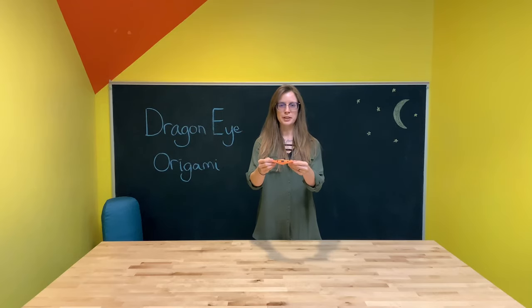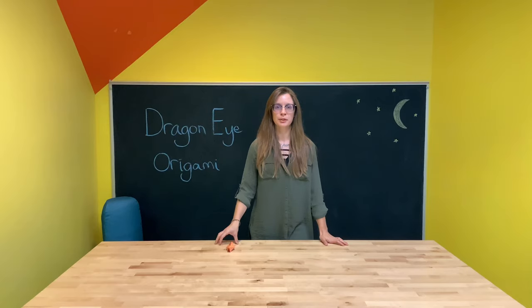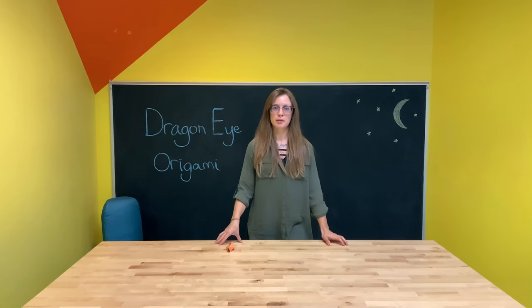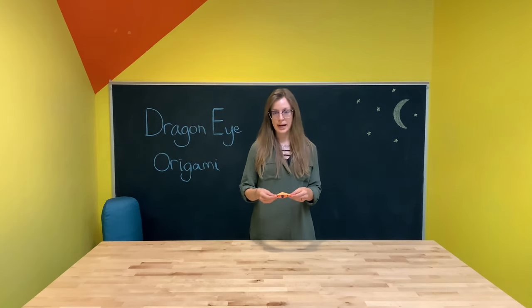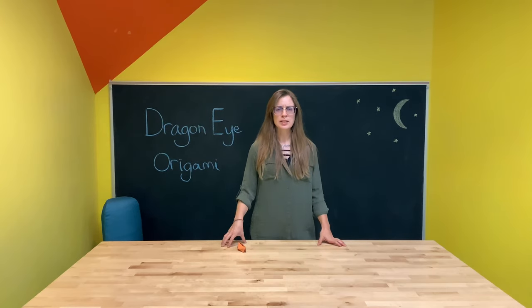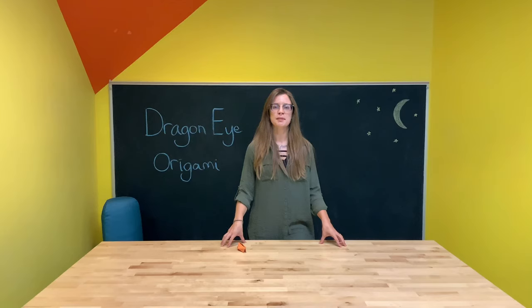Now origami is a craft that goes back at least 300 years in Japan. So it's been around for a long time. There are so many cool things you can make. We've made cranes already. We're going to make dragon eyes today. You can make dogs and cats, all sorts of animals and buildings.